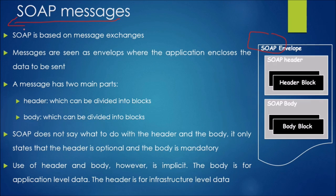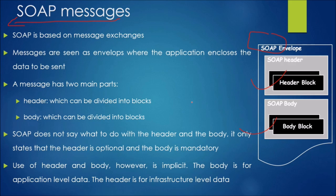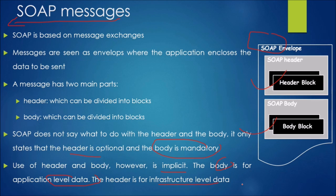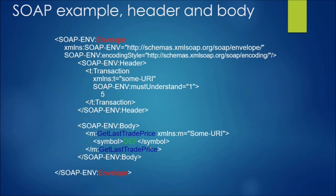SOAP messages are based on message exchanges, and messages are seen as an envelope where the application encloses the data to be sent. A message has two parts: the header and the body. SOAP does not dictate what to do with the header and body — it only states that the header is optional and the body is mandatory. The body carries application-level data, and the header carries infrastructure-level data, which is why the header is optional.